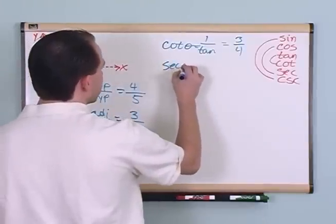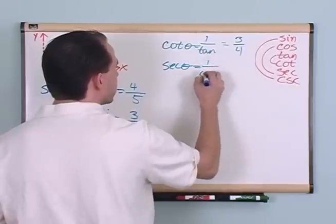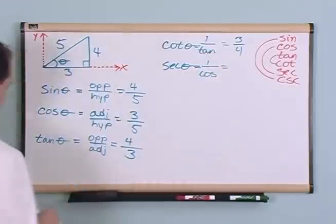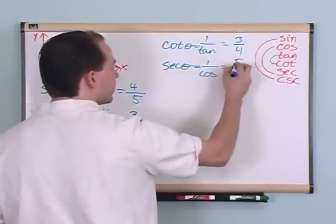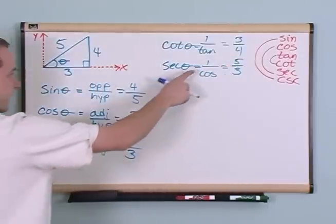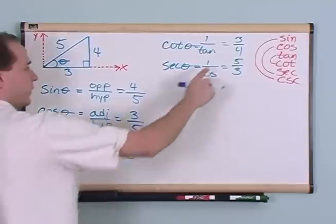For secant, secant is one over cosine. Cosine I found already to be three-fifths, so this is five-thirds. And the reason it is is because it's one over cosine. Cosine is this, one over this. You flip it over, it's five-thirds.